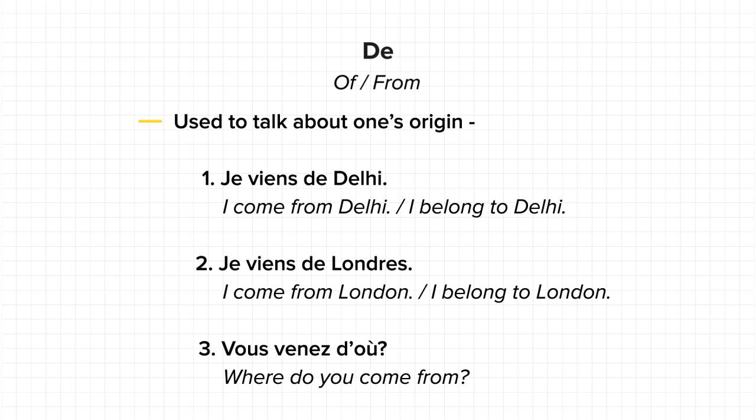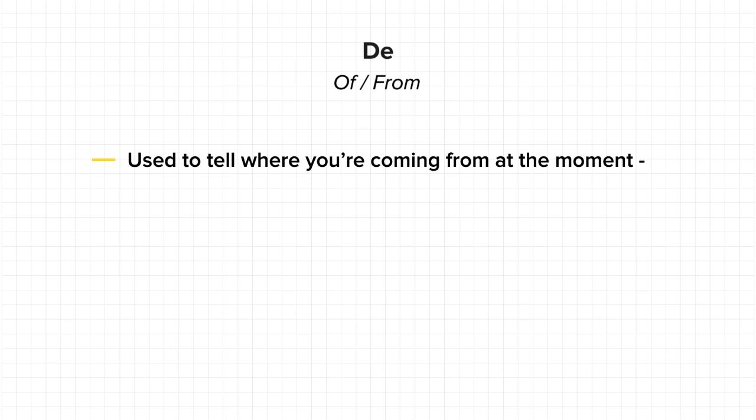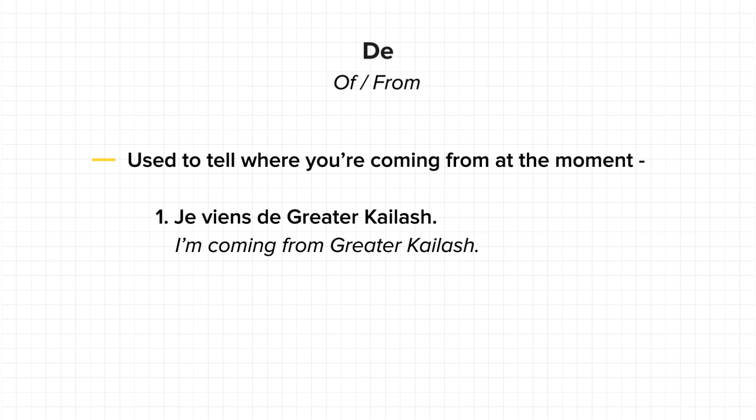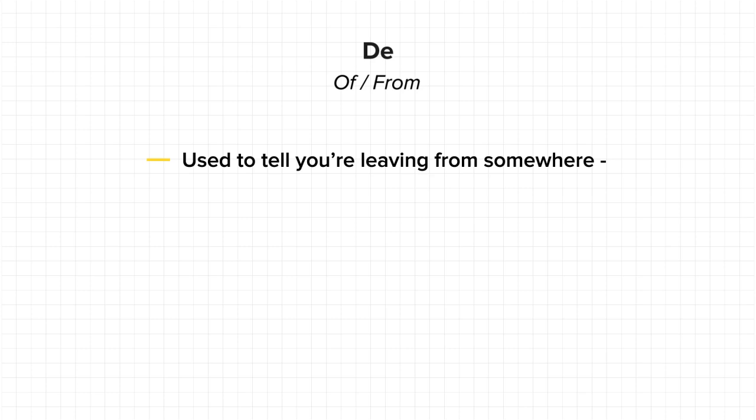I can even ask someone of their origin: 'Vous venez d'où?' — 'Where do you come from?' Another usage of 'de' is when talking about where you are coming from at that very moment. For example, in the morning I was in Greater Kailash and I am coming from there right now, so I would say 'Je viens de Greater Kailash'. If I wish to ask a friend, 'Are you coming from Lajpatnagar?', I would say 'Tu viens de Lajpatnagar?'